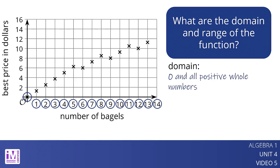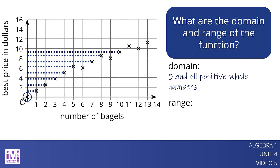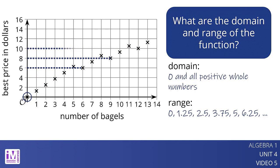The range includes 0 and certain positive values. The best price can be $0 for buying 0 bagels, certain multiples of $1.25, certain multiples of $2, and so on.